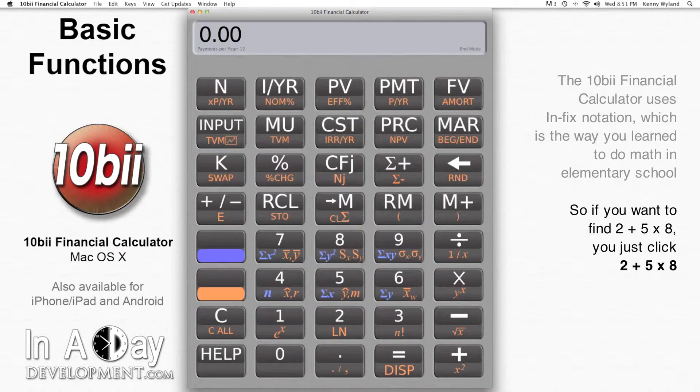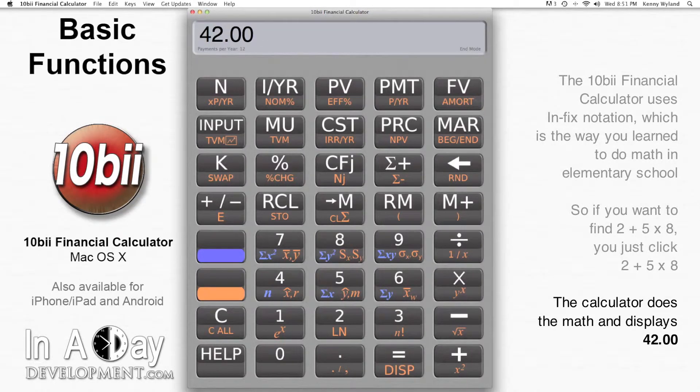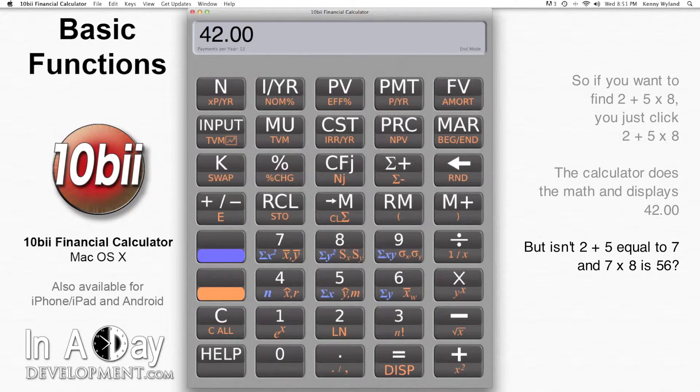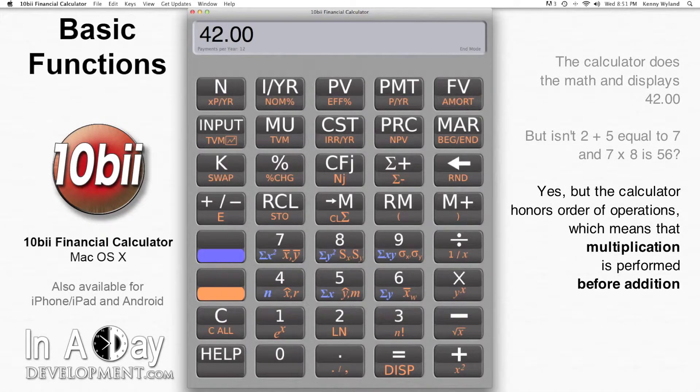That means that if you have 2 plus 5 times 8, then you type in 2 plus 5 times 8 and hit equals. The calculator does the math and displays 42. Wait, you say, I thought 2 plus 5 is 7, and 7 times 8 is 56. You're right, but remember that in arithmetic, multiplication is performed before addition.